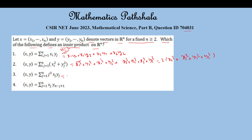Option 3 is: x1·y1 + 2·(x2·y2). Option 4 is: x1·y2 + x2·y1.